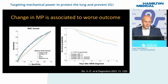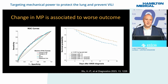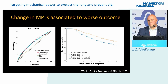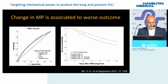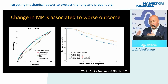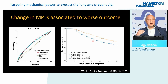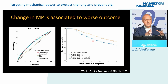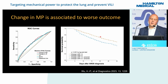An interesting concept is whether mechanical power changing over time matters for patient outcomes. It seems it does. Looking at change in mechanical power and change in driving pressure: if mechanical power increases over time, the survival probability is lower compared to patients who started at the same level but whose mechanical power decreased. Clinically this makes sense — if someone received a lot of energy at the beginning but improves, they are likely to have a better outcome.